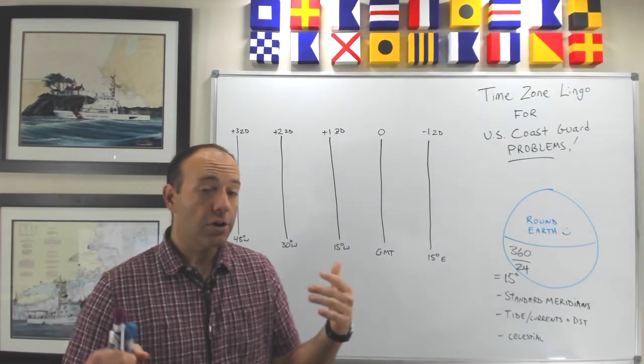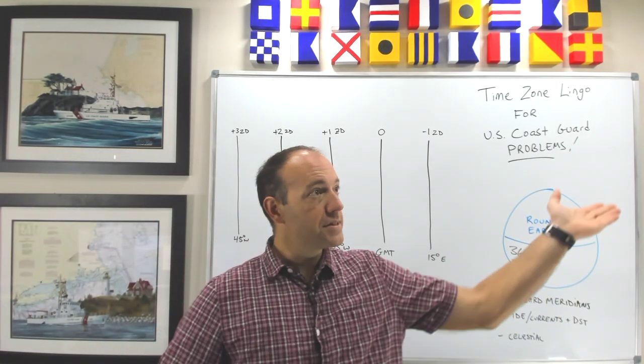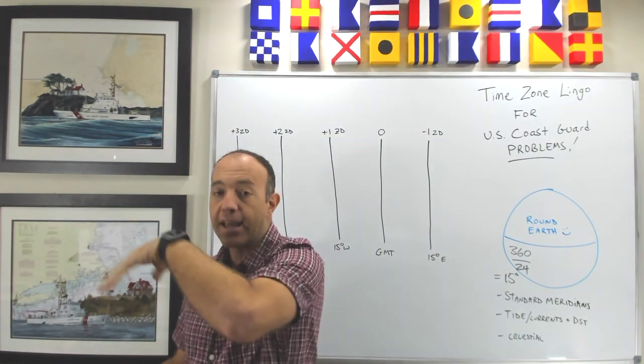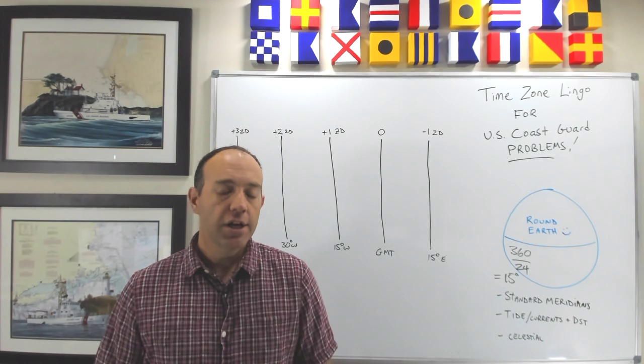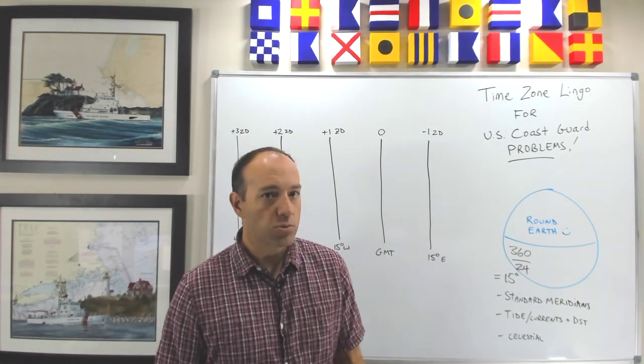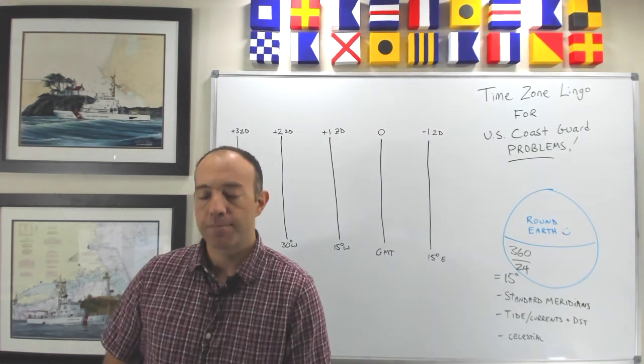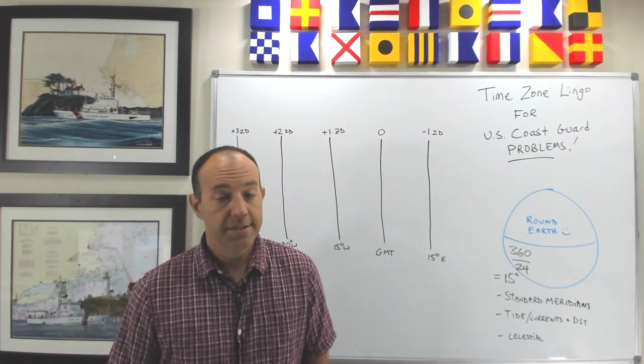Another way to think about that is that if the earth were just kind of static and the Sun was moving across the sky it would do so at a rate of about 15 degrees per hour. So our time zones are 15 degrees wide and that leads to the concept of standard meridians.